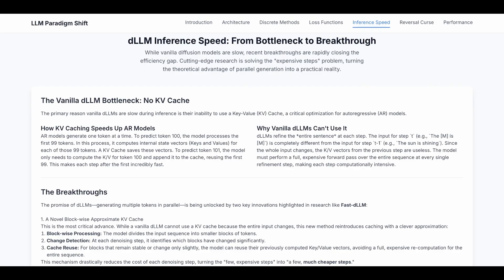However, vanilla diffusion LMs can't use KV cache because there's no causal relationship. You're not only using your previous context. Diffusion LMs refine the entire sentence at each step. The input for step t is completely different from the input for step t-1 since the whole input changes.